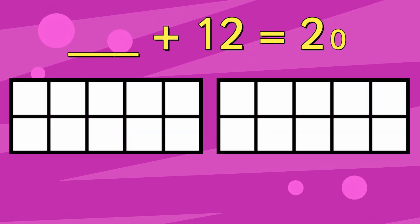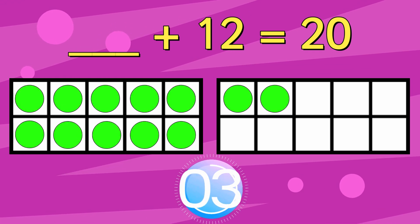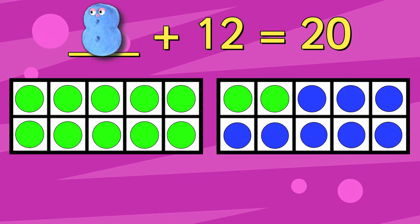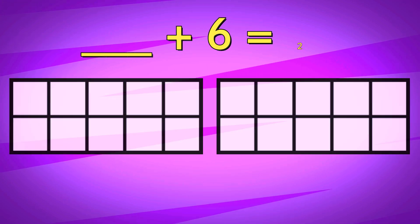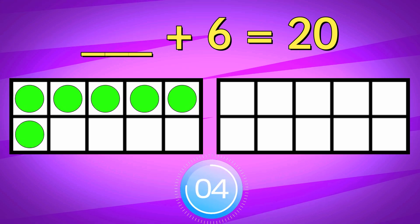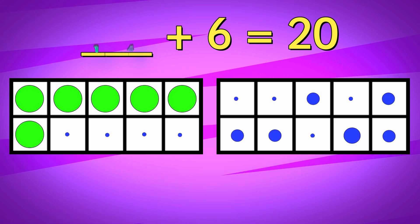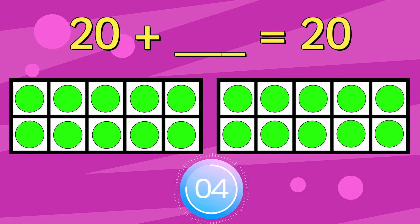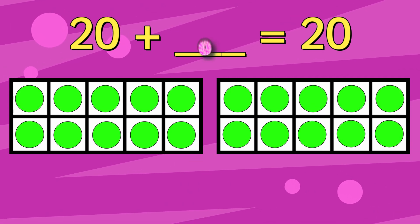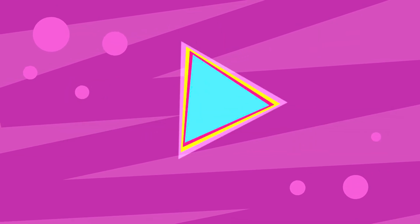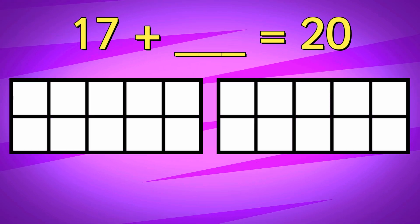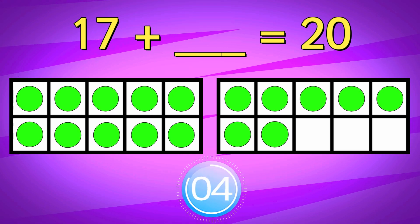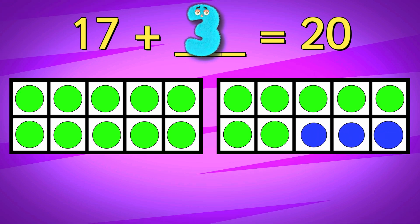Something add 12 equals 20. The answer is 8. Something add 6 equals 20. The answer is 10.